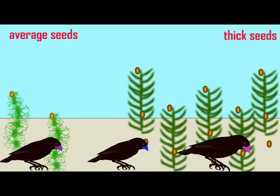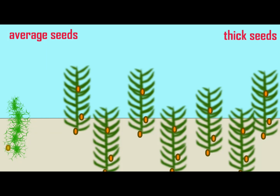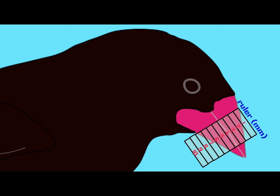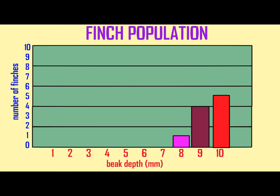Thus, those finches which would be best able to find food, and then also to defend a territory if male, or to produce more eggs if female, would be those with the thicker beaks. Thus, the feature of having a thick beak would increase in frequency in the population, and over time, the average beak depth of the population would change. This is directional selection.